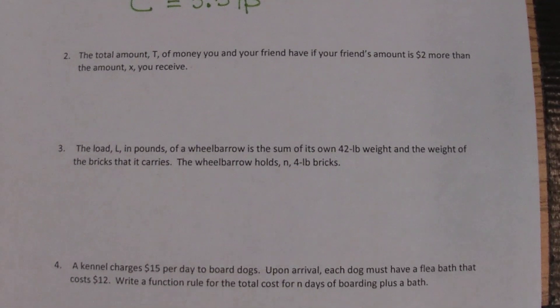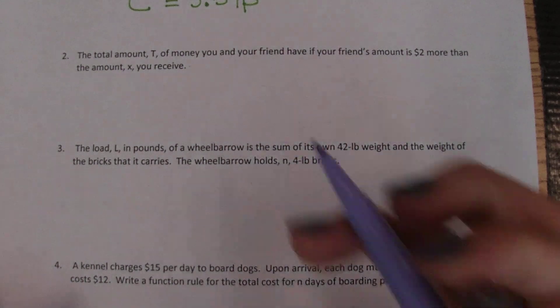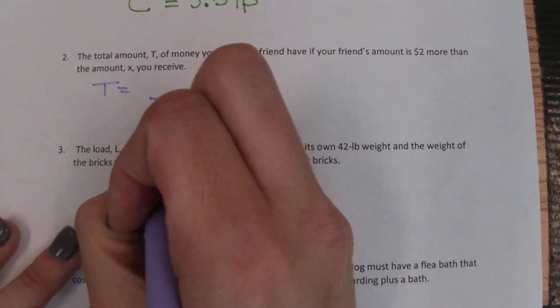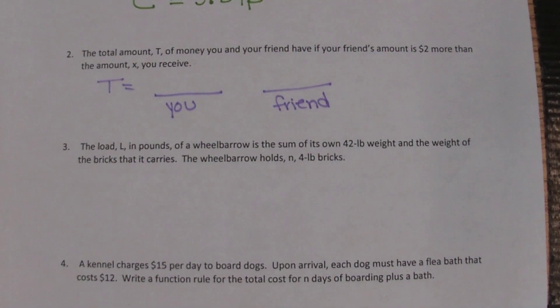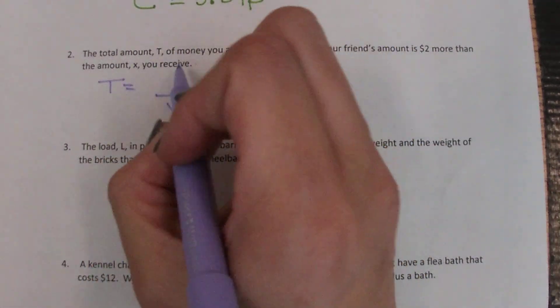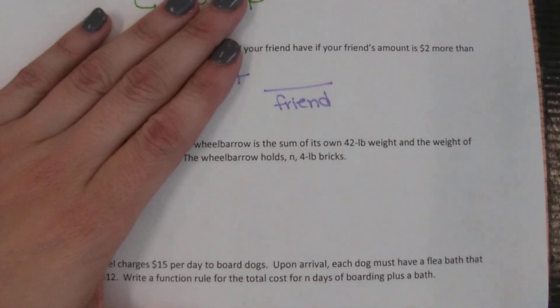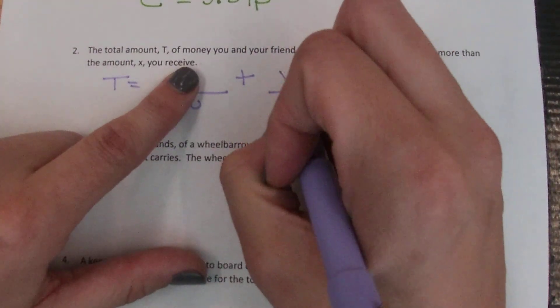Let's look at another one. The second one, the total amount T, so we know we're adding some stuff up and we're setting it equal to T. Things that we need to add up: money you and your friend have. So we need some money for you and some money for your friend. If your friend's amount is two more than the amount X you receive, it's telling us the amount that we receive is X, and it's total so we're adding to it. And our friend makes two dollars more than us, so we can't just say that our friend makes two dollars. Our friend makes the same amount that we make, so how much did we make? We made X.